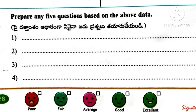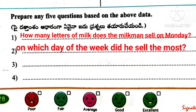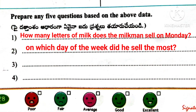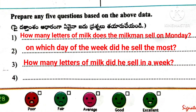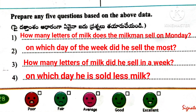Prepare any 5 questions based on the above data. First question: How many liters of milk does the milkman sell on Monday? Second question: On which day of the week did he sell the most? Third question: How many liters of milk did he sell in a week? Fourth question: On which day did he sell the least milk?